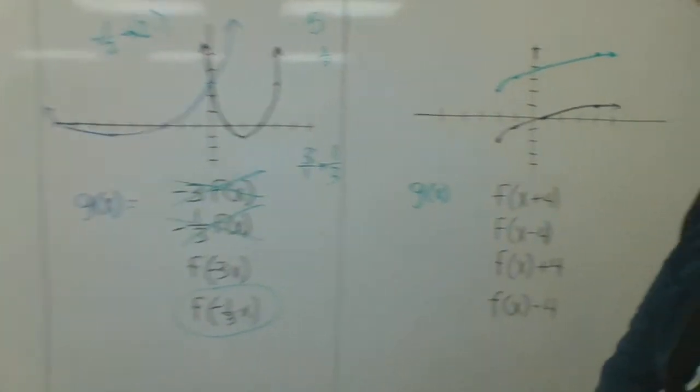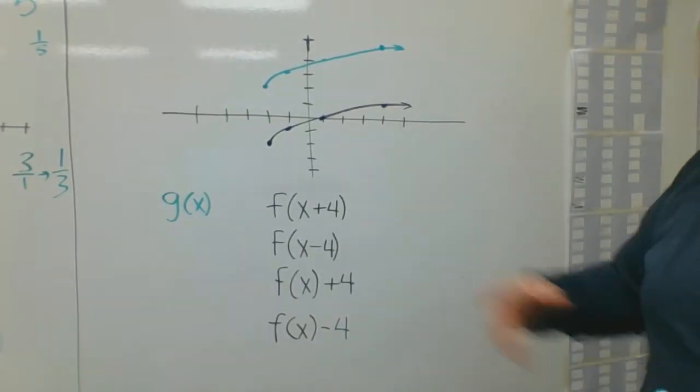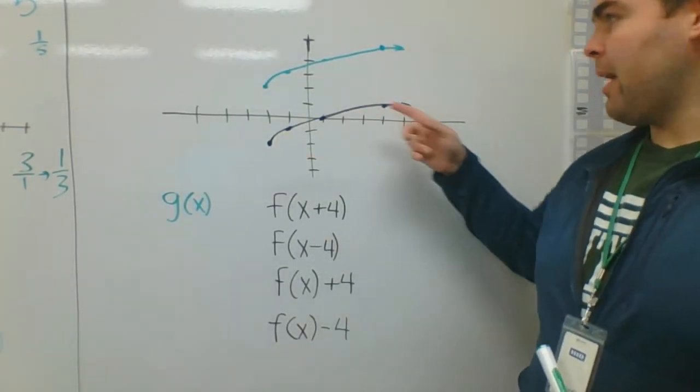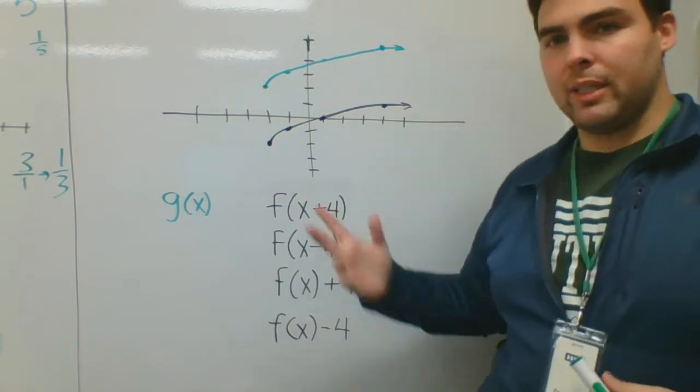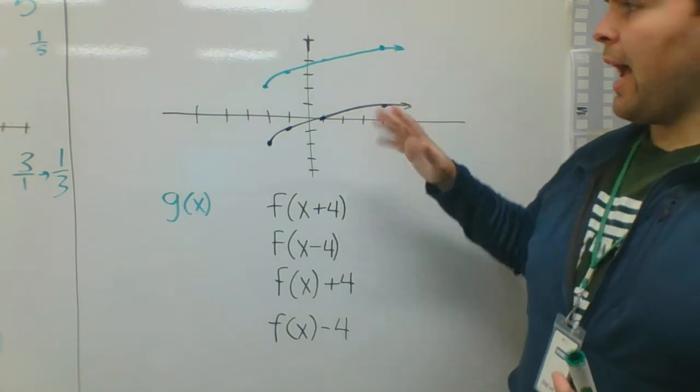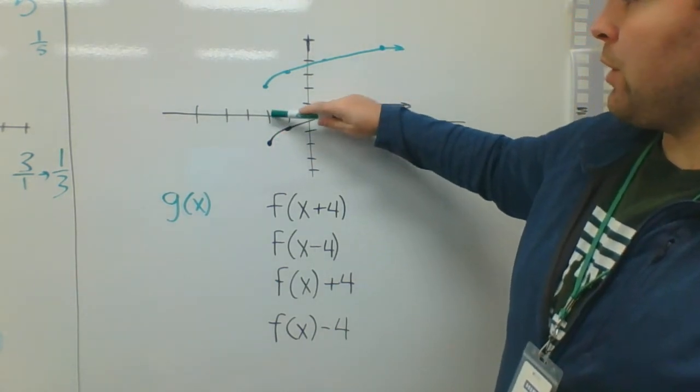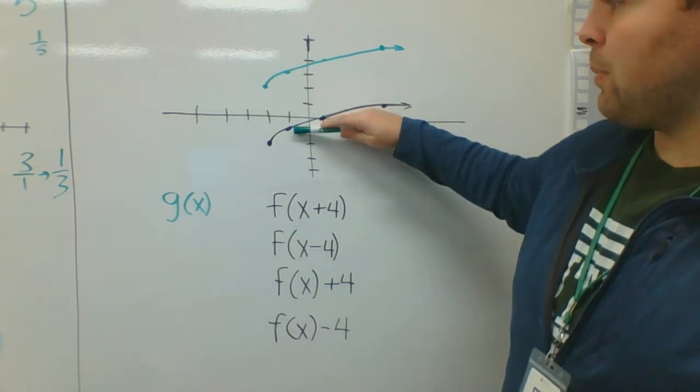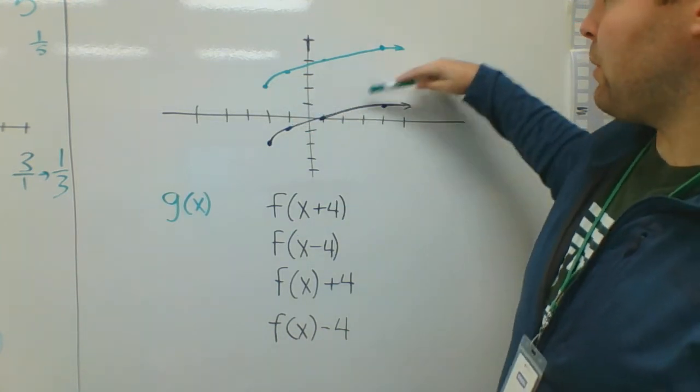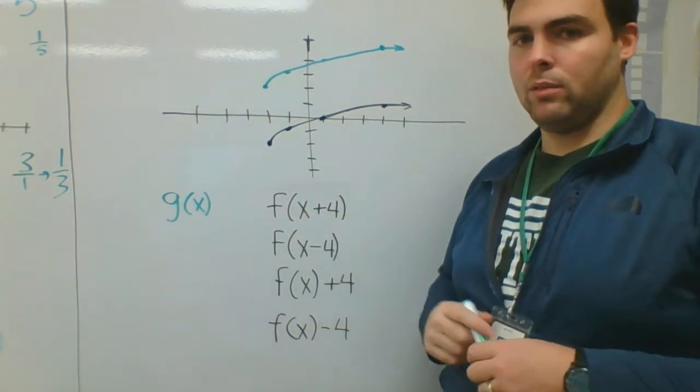Moving on to example 3. Here, I've got my original f of x, I've got my new g of x. First thing I ask myself, is the shape the same? Yeah, it's the same. There's no difference in anything. I can see everything's just kind of shifted. This goes up 1, 2, 3, 4. This goes up 1, 2, 3, 4, 1, 2, 3, 4, 1, 2, 3, 4. So I know there's a shift vertically of 4.